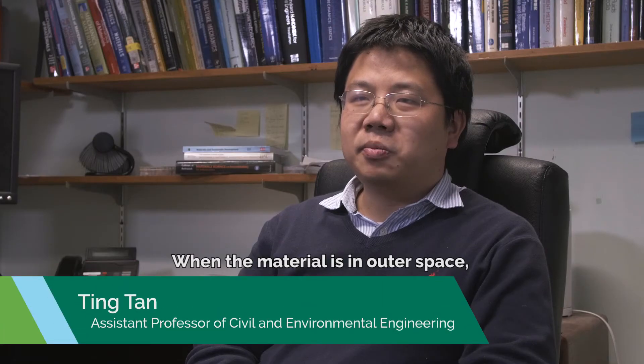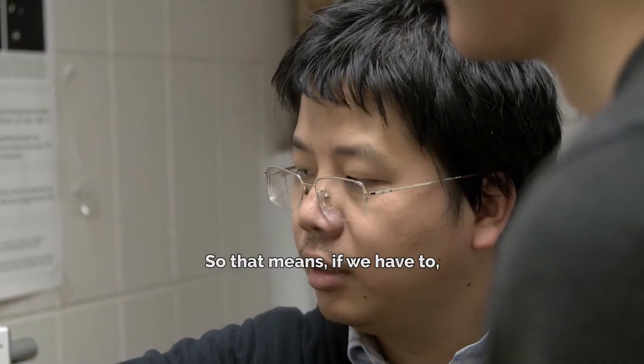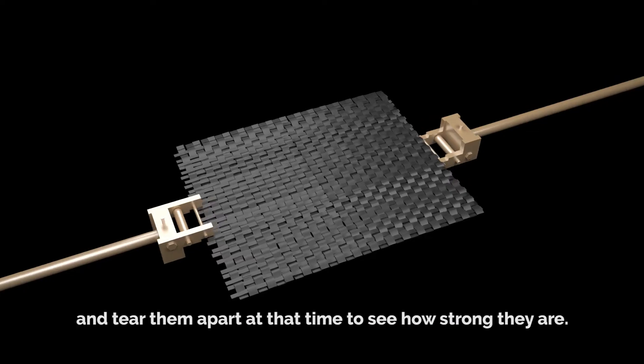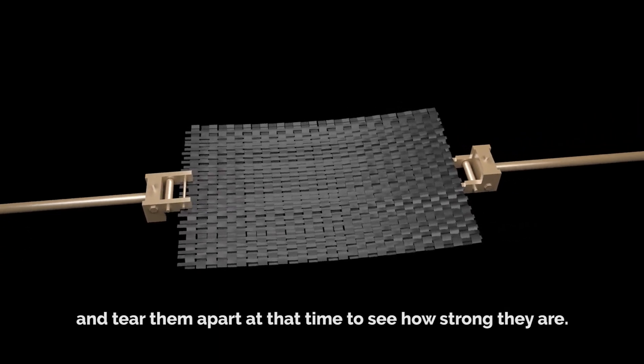When the materials are in outer space, their environment is different from the Earth. So that means if we have to put the pair of hands in that space and tear them apart at that time to see how strong they are.